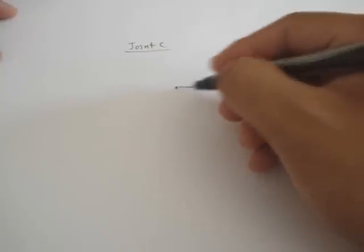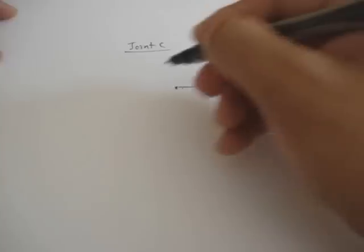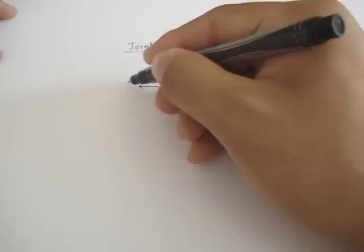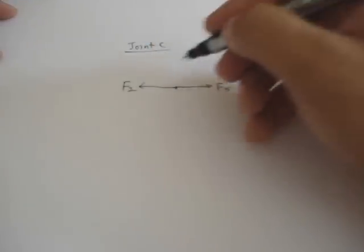Now joint C, you've got F5, F2. Again, draw everything in tension. If the member force turned out to be negative, it means it should be in compression instead.